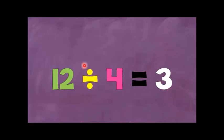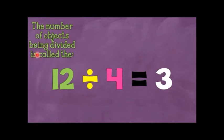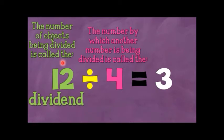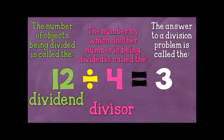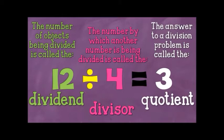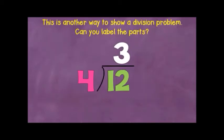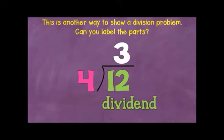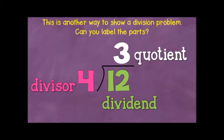This is the division sign. The number of objects being divided is called the dividend. The number by which another number is being divided is called the divisor. The answer to a division problem is the quotient. This is another way to show a division problem — can you label the parts? 12 is the dividend, 4 is the divisor, and 3 is the quotient.